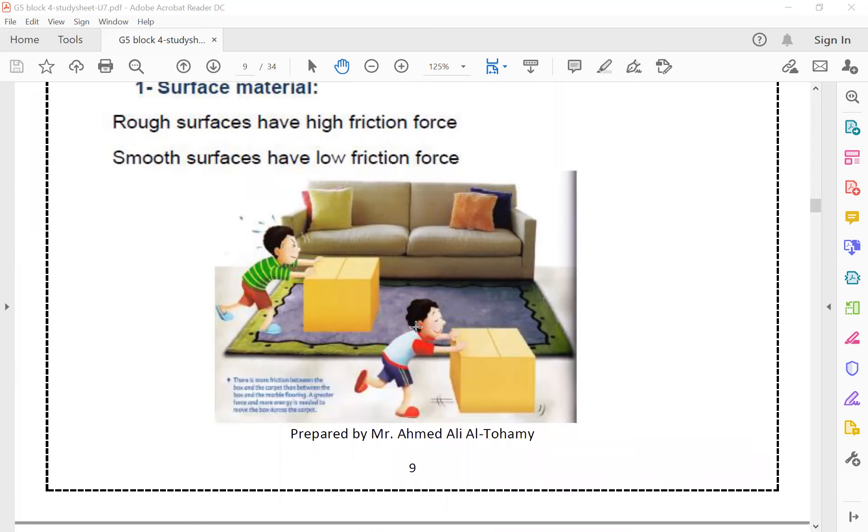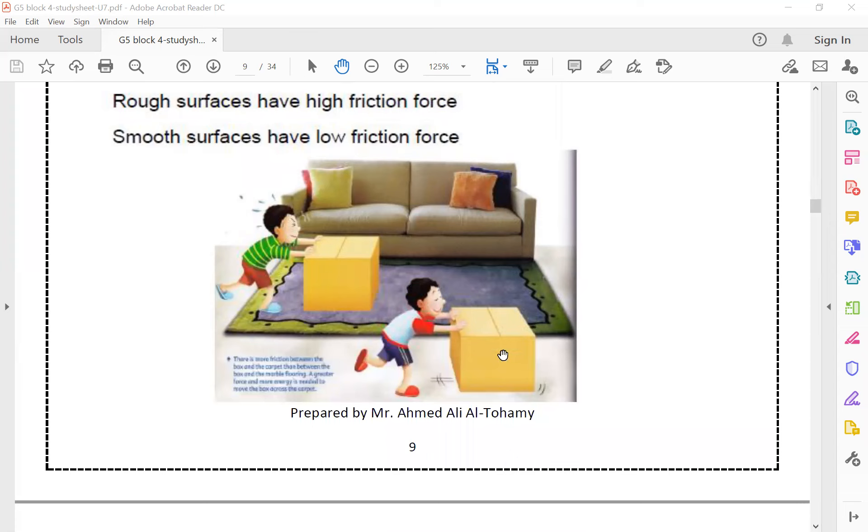In this picture, this boy pulls the box easily because the surface is smooth. But this one pulls this box with a higher force because the friction force is higher because he tried to pull the box on a rough surface.